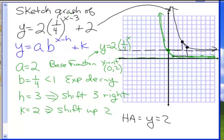The final graph in black is the translated function — up and to the right. In green is the graph of the base function. I hope this helps.